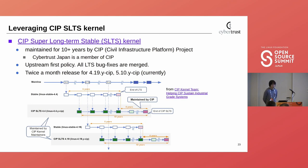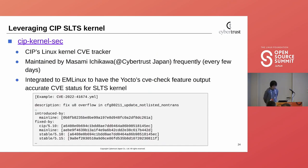The SLTS kernel has an upstream-first policy and all LTS bug fixes are merged. The SLTS kernel team is making twice-a-month releases for the 4.19 and 5.10 kernels currently. We use CIP kernel-sec to check kernel vulnerabilities. CIP kernel-sec is CIP's Linux kernel CVE tracker, maintained by Masami Ichikawa from CyberTrust Japan every few days.